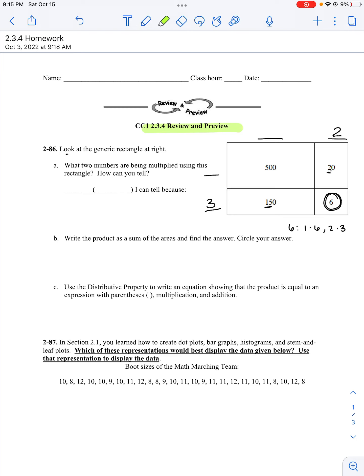20 divided by 2 is 10. So that means 10 times 2 is 20, which is correct. 500 divided by 10, that's 50. 50 times 10, 5 times 1 is 5, and then I put my 2 zeros.